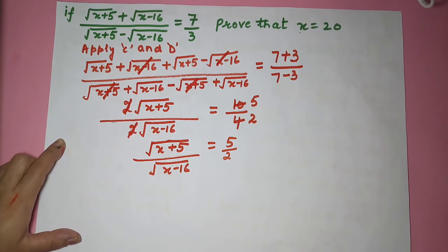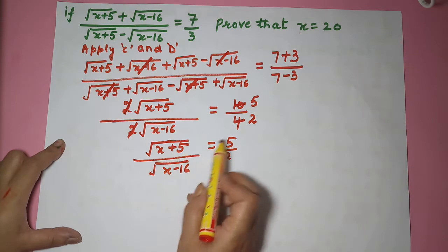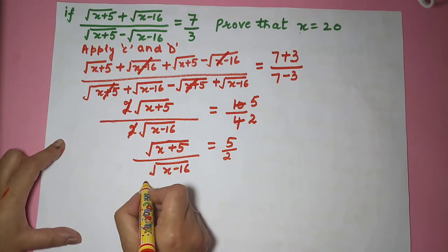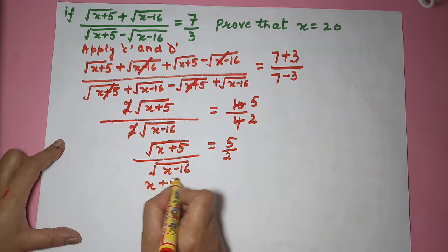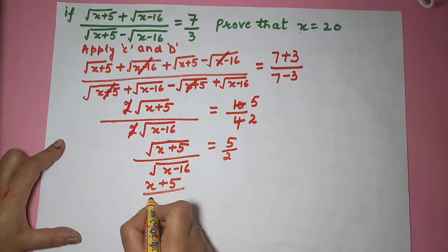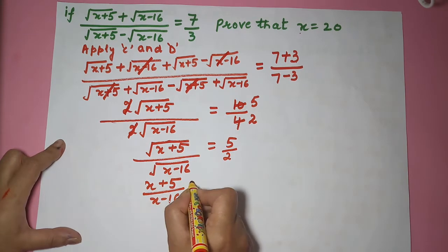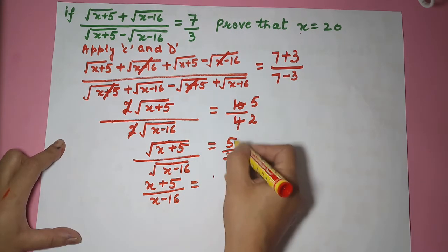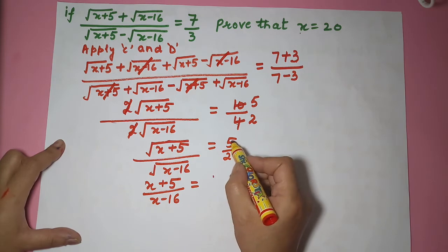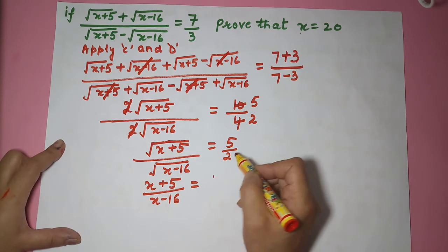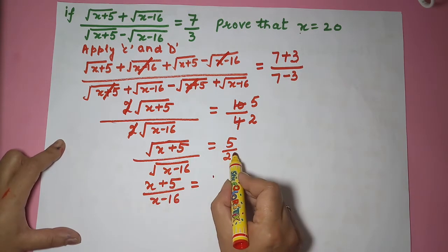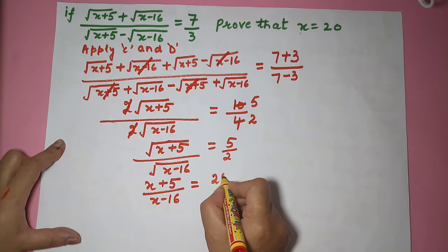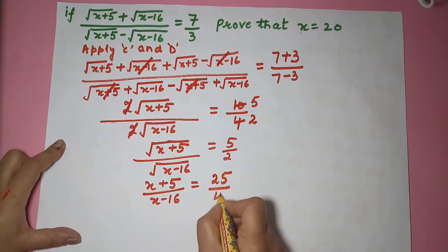Now, in order to get rid of this under root, you can square both sides. What will you get? x plus 5 upon x minus 16 is equal to — you are squaring this side also. Sometimes you make the mistake of squaring one side only and leaving the other side, so be careful — 25 upon 4.